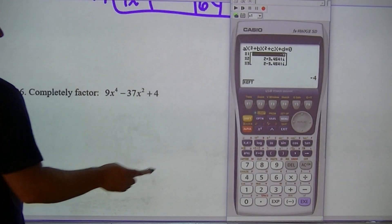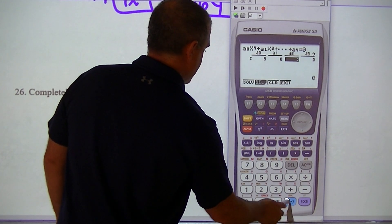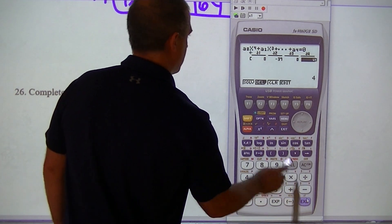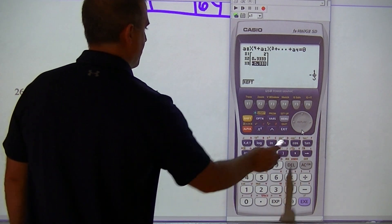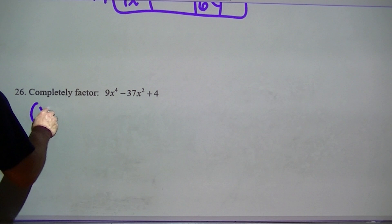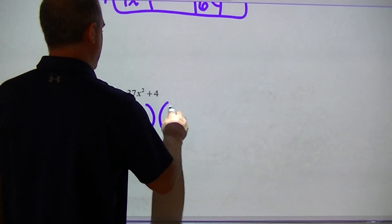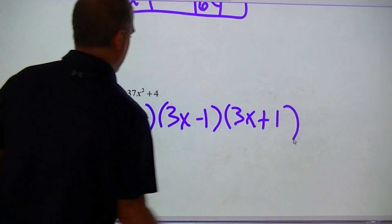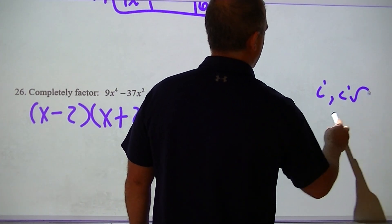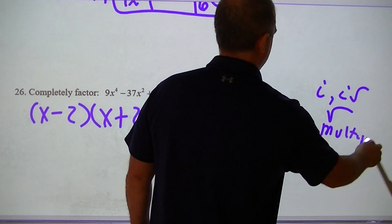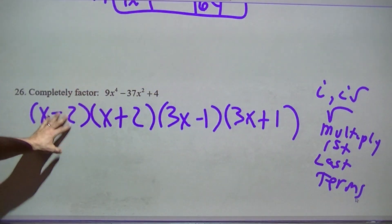Question 26: go back into Equa, degree 4. Type in 9, 0, negative 37, 0, 4. My answers: x equals 2, x equals 1/3, x equals negative 1/3, and x equals negative 2. So I get (x minus 2)(x plus 2)(3x minus 1)(3x plus 1). I'm good with this because all numbers are clean. If you ever get an i, an i square root, or a square root, you multiply the first and last terms — but I do not have to do that here.